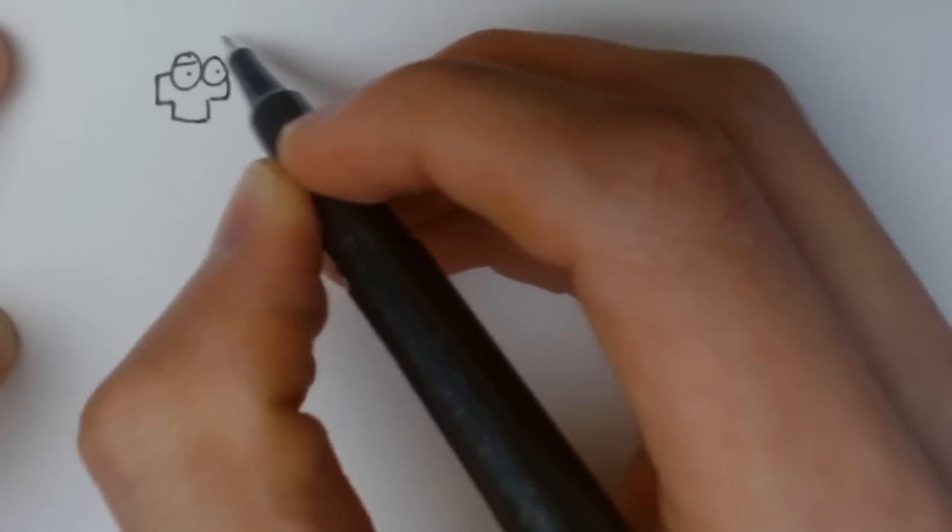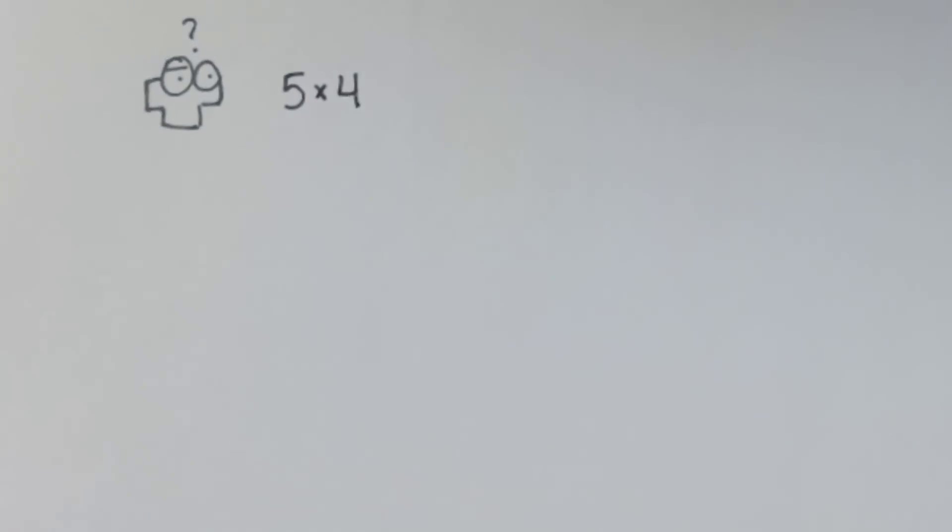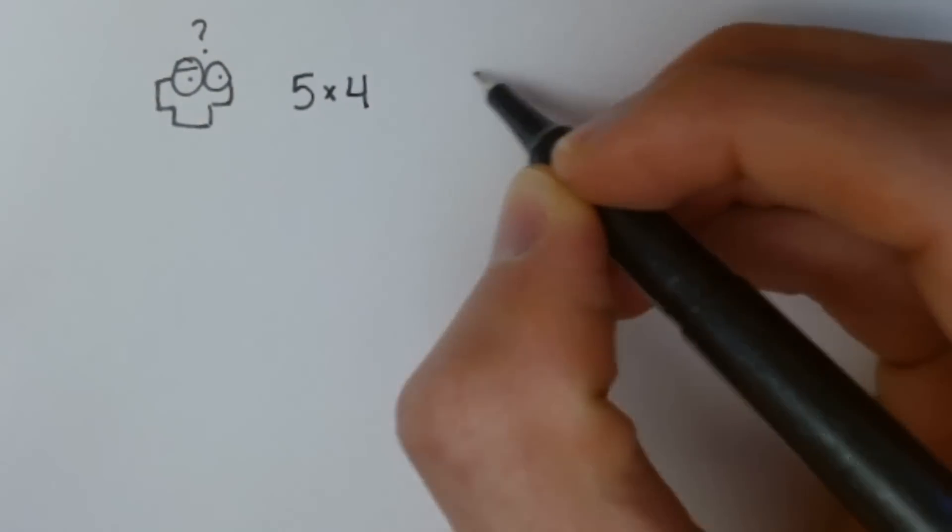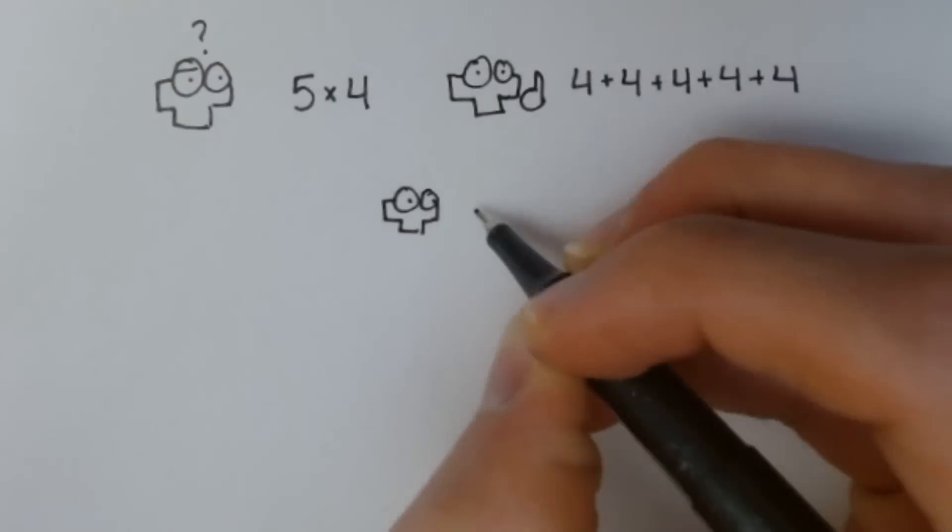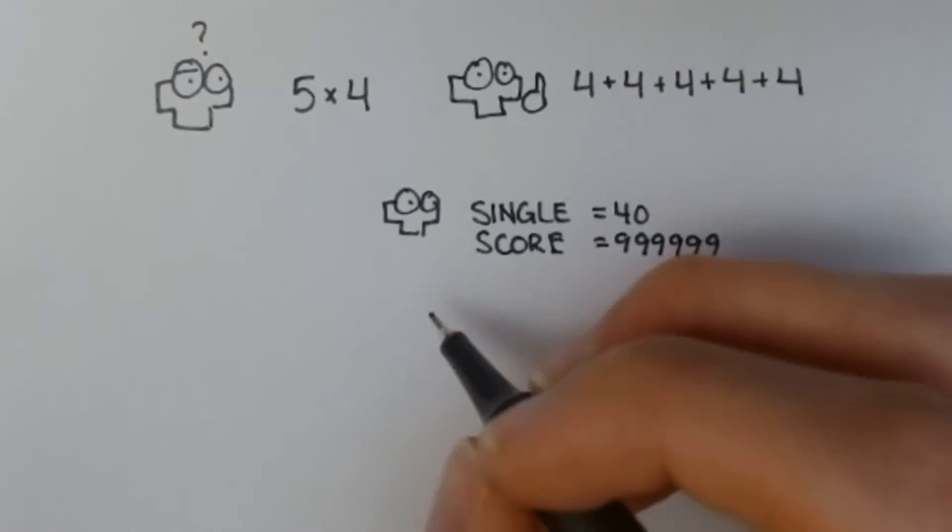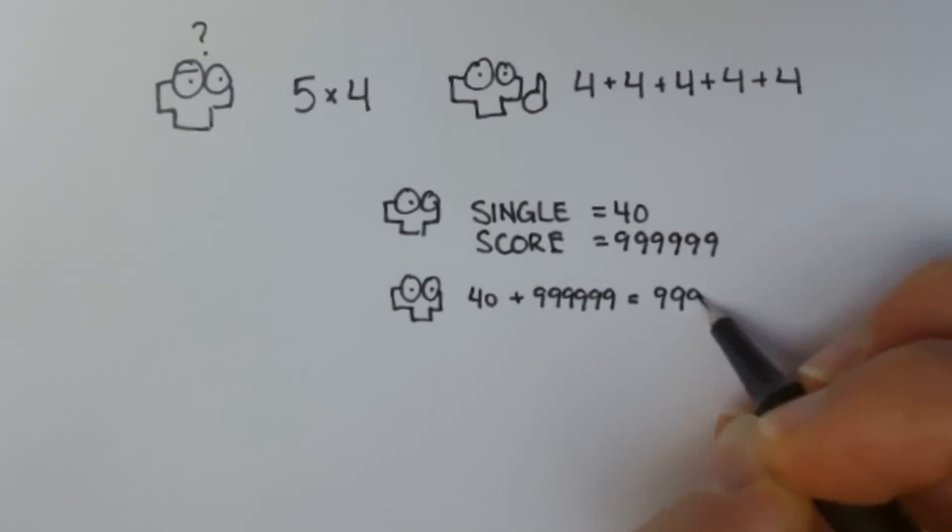First, let's show why the score takes so long to calculate. NES Tetris does math like a second grader learning multiplication for the first time. To calculate the score for a single at level 155, it takes the score for a single at level 0 and adds it to your total 156 times.